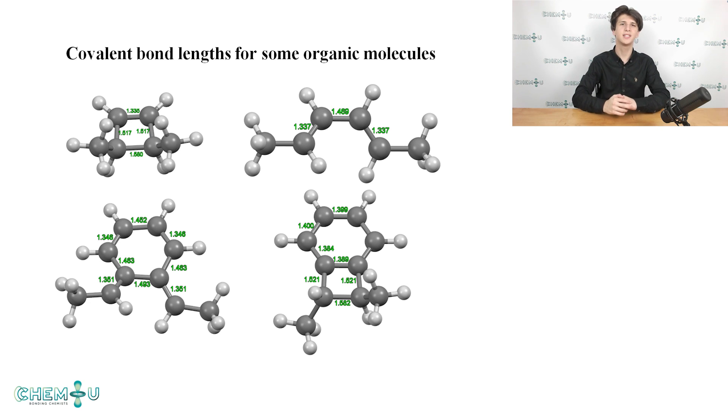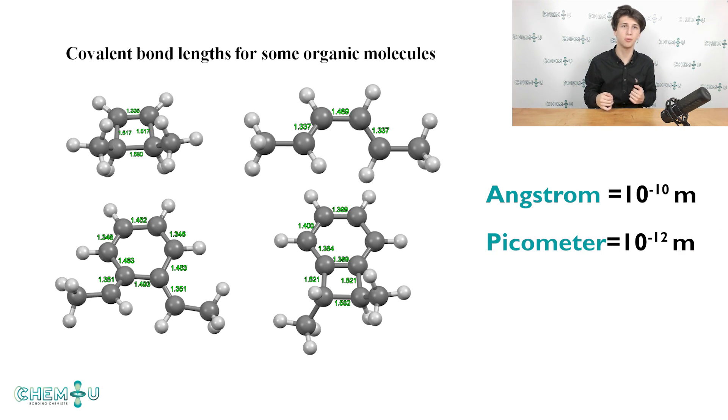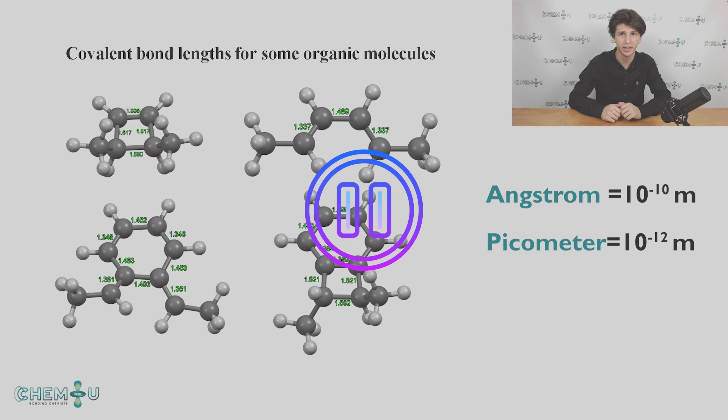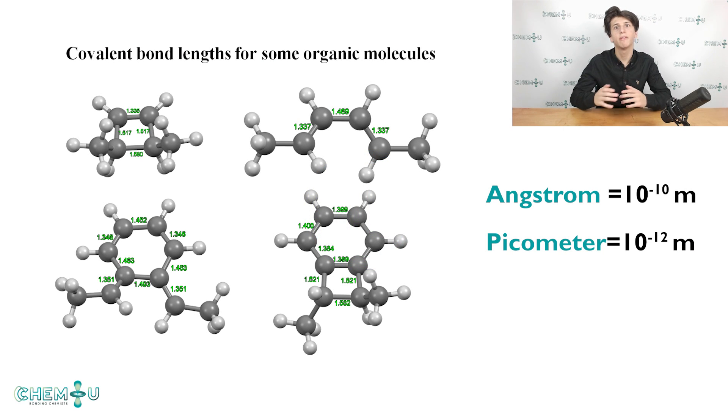Now on the slide you can see several organic molecules and some of the covalent bond lengths that are predicted with quantum chemical calculations. The typical units for bond length are angstrom, which equals 10 to the power of minus 10 meters, and picometer, which is 100 times smaller and corresponds to 10 to the power of minus 12 meters. Pause the video and inspect the given bond lengths.